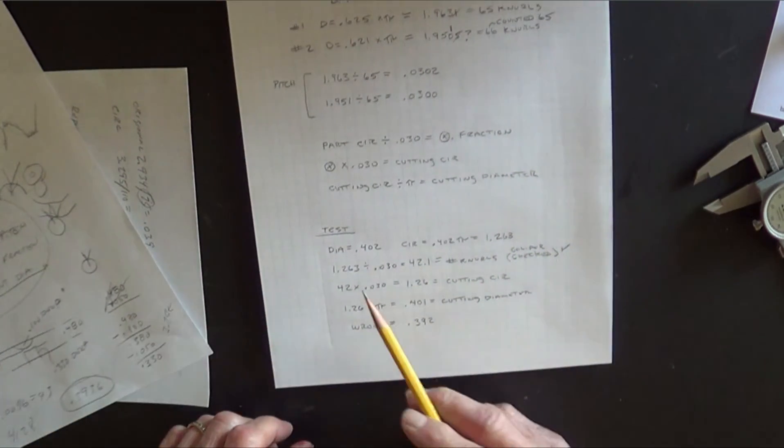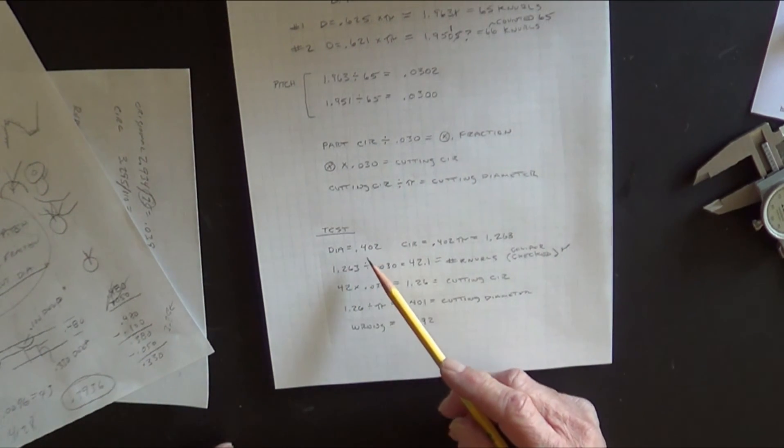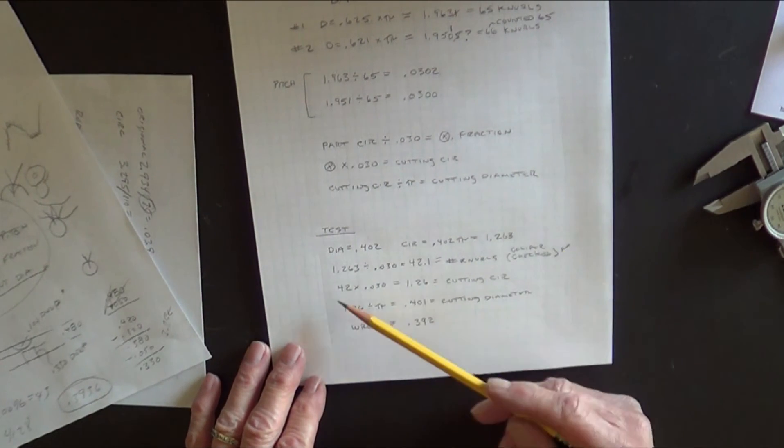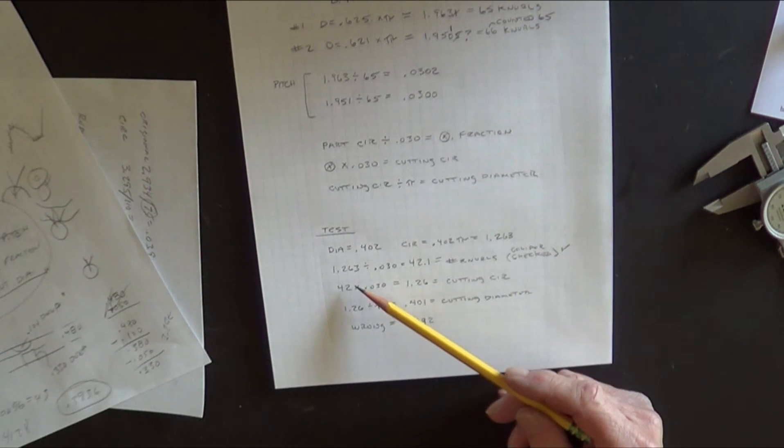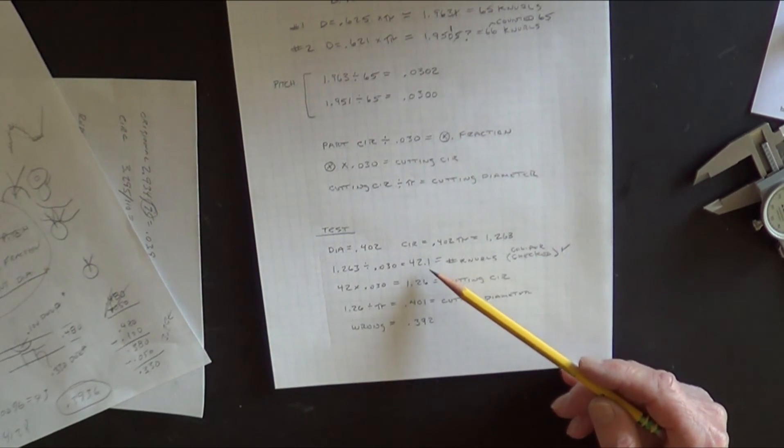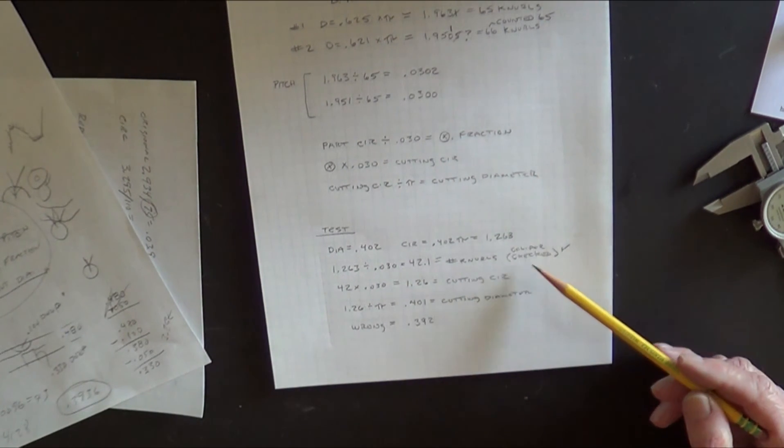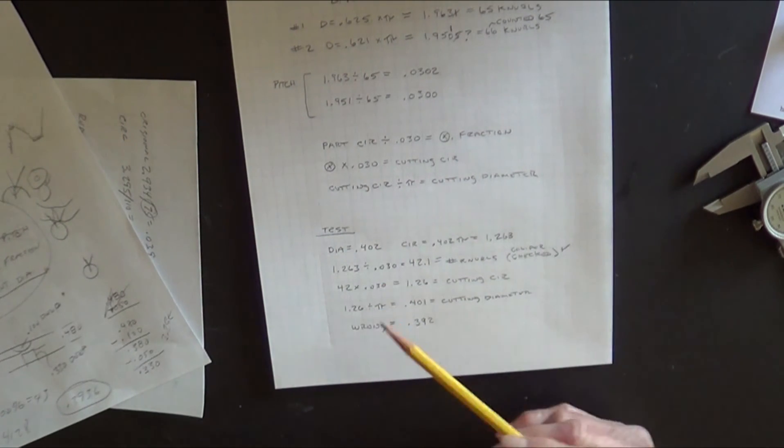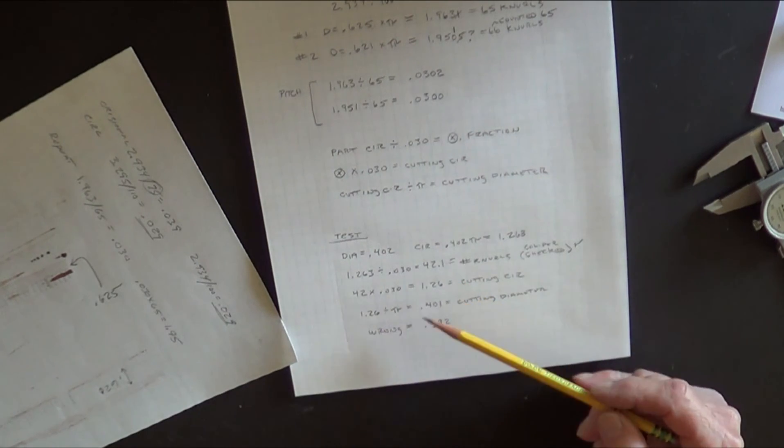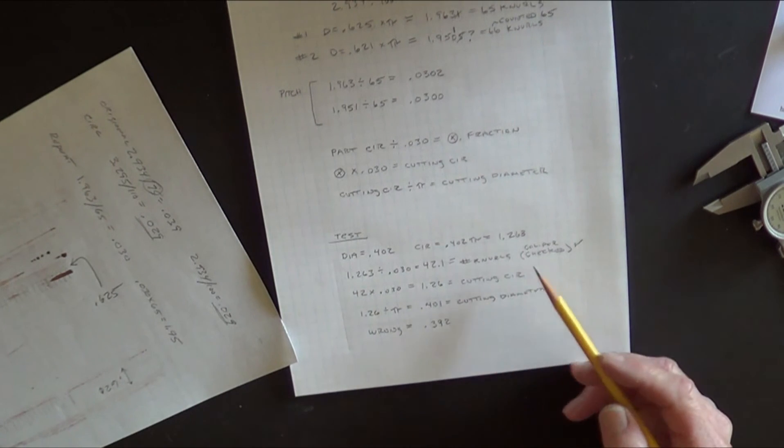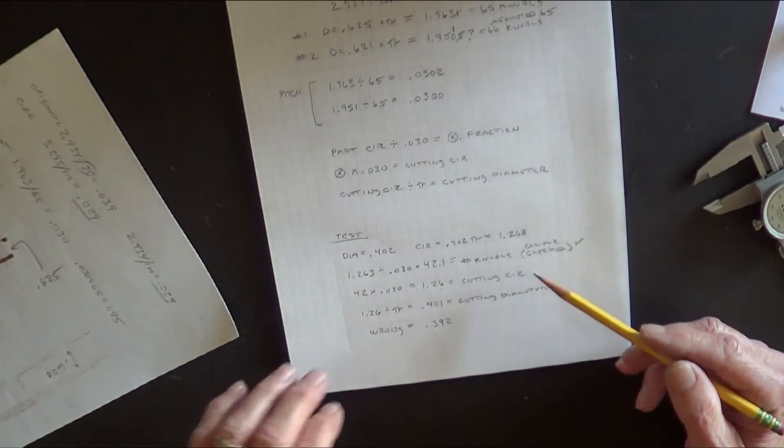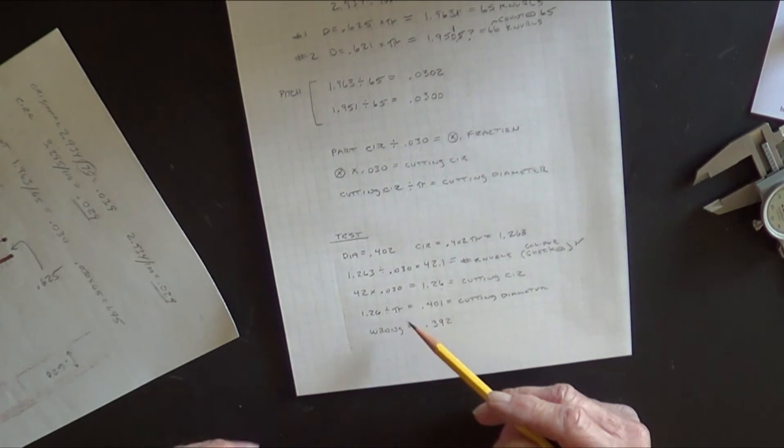So I did a test part on it. I actually machined a piece of aluminum. Came up with an exact diameter reading of .402. According to all of this math, the circumference is .402 times pi. It gives me that. Then the circumference divided by the 30 thousandths means I'm going to get 42.1. So that's where it's off on the diameter. You're going to start drifting by 100 thousandths. So that gives me the number of knurls. And I did caliper that dimension and stuck it on this sheet and did verify. Yes, I am going to get 42 knurls with that dimension. So you knock off the fraction. 42 times 30 thousandths is 1.26, which is the cutting circumference. And that's where Michael again corrected me. Now you've got to divide that by pi to get the cutting diameter.